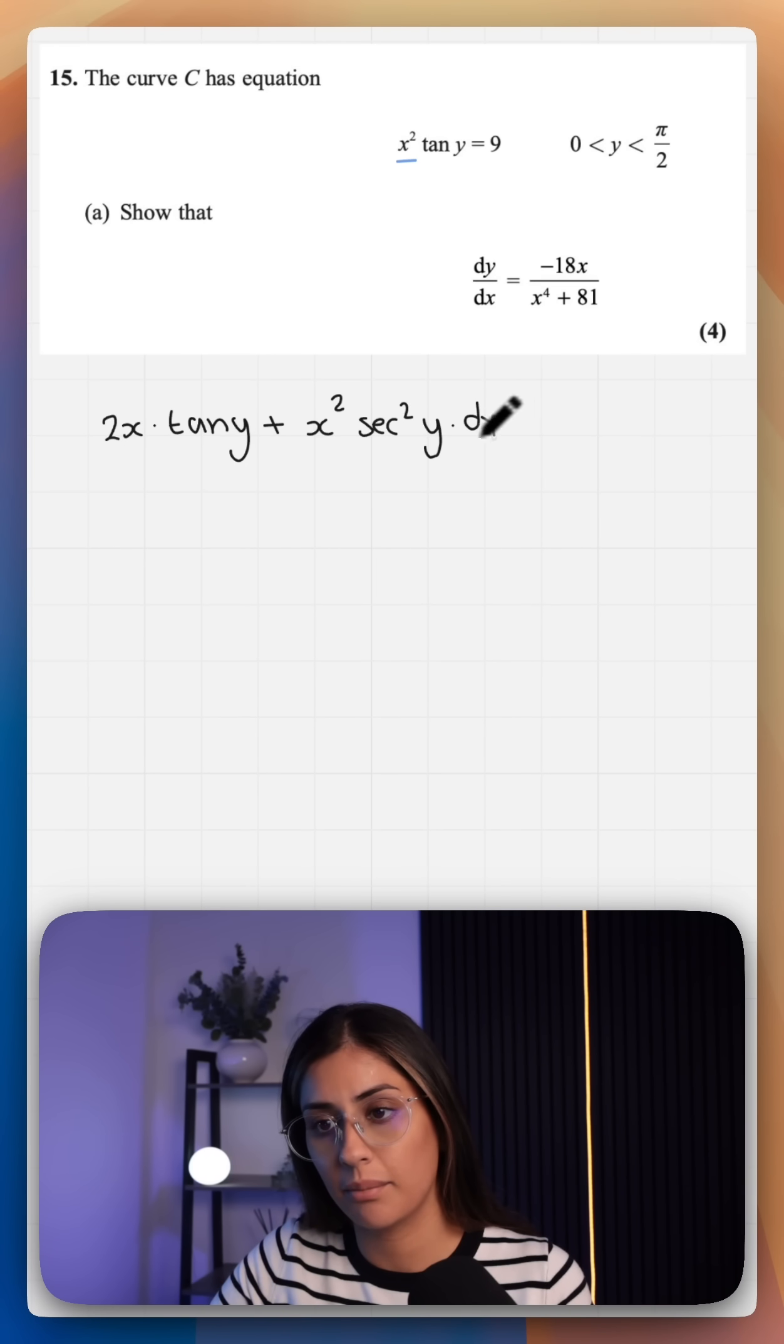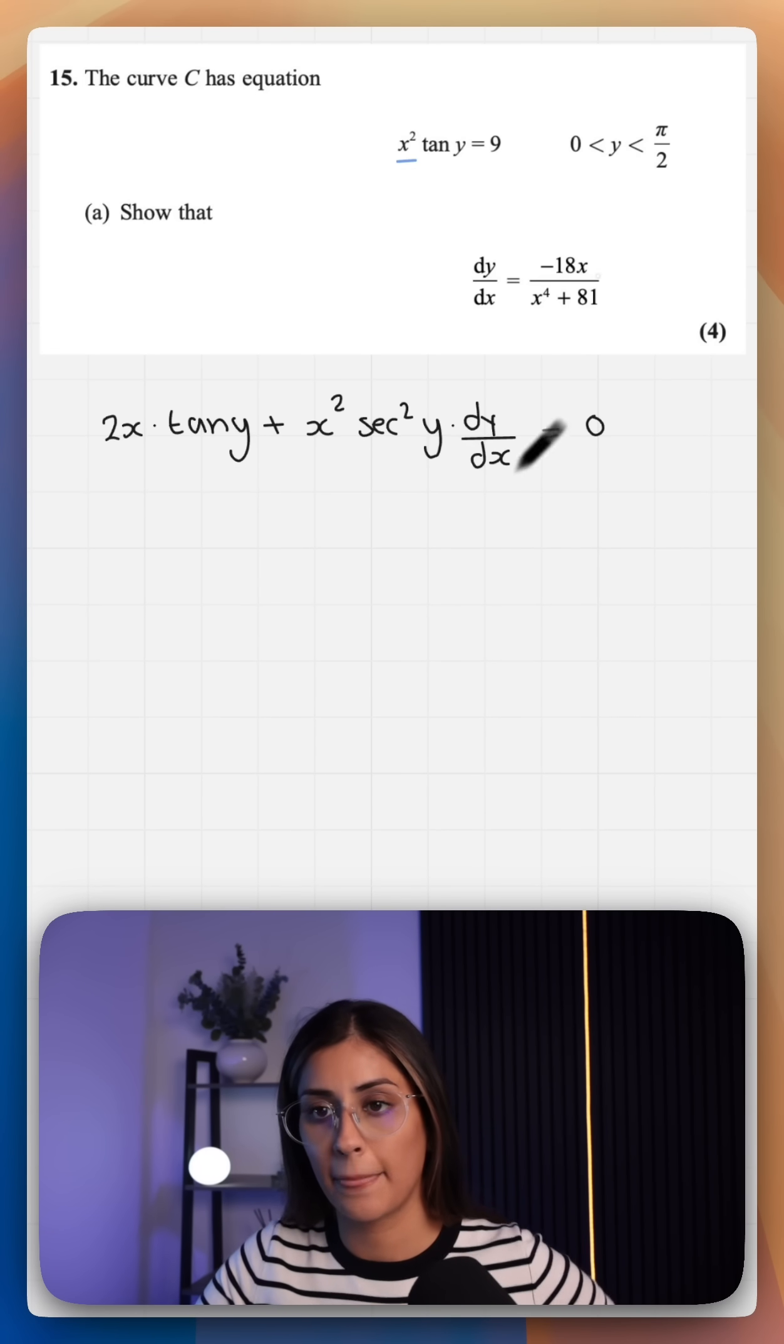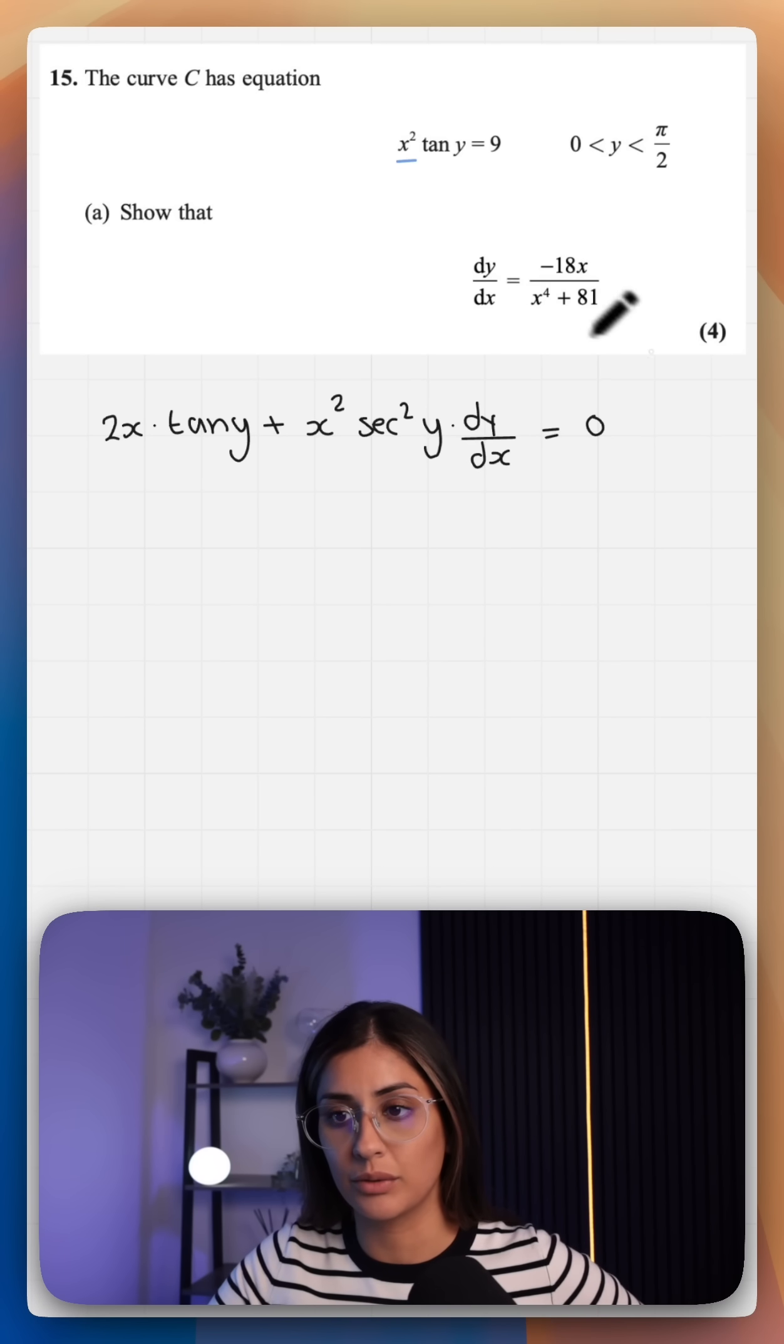We want to multiply that by dy/dx because this is implicit. The right hand side gives us 0. We want to show dy/dx is equal to this.